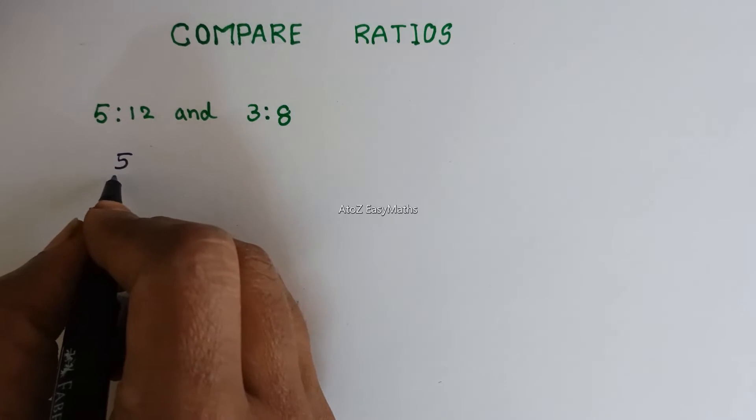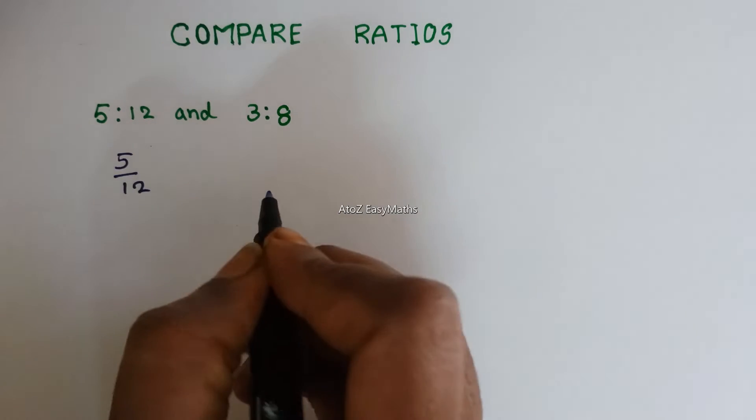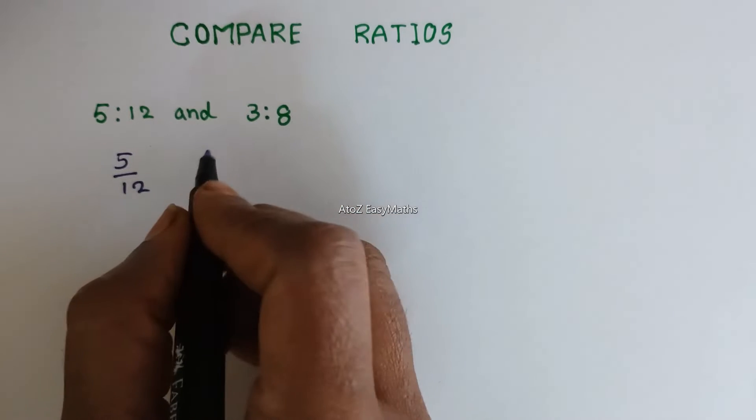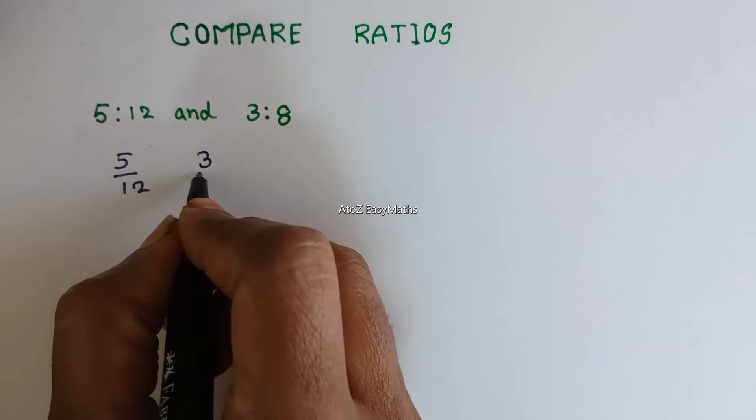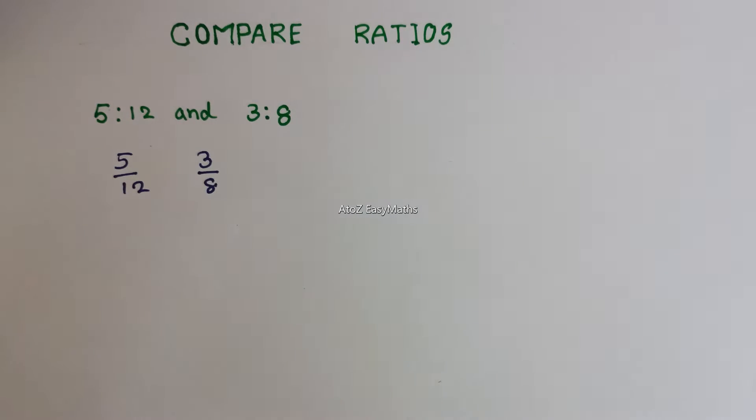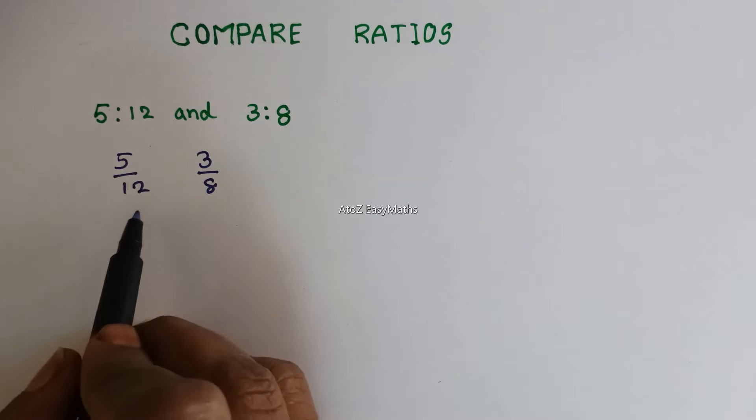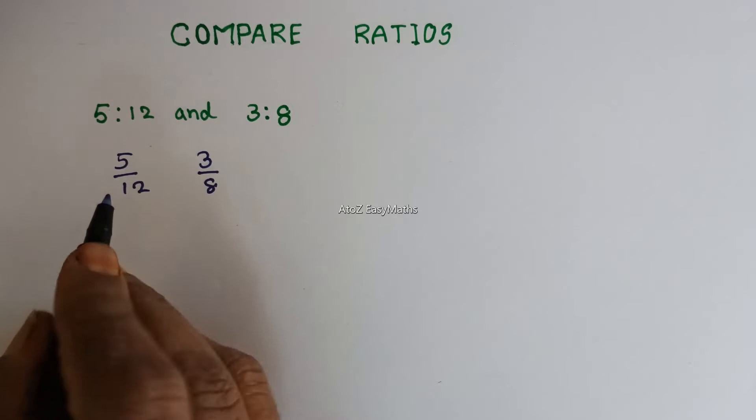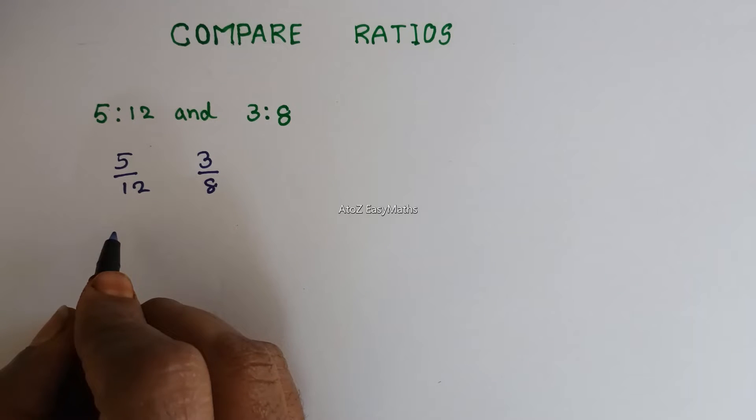We can write 5 over 12 and 3 is to 8 as 3 over 8. Now we can make the denominators equal. If the denominators are equal, then whichever numerator is bigger, the fraction is bigger. That means the ratio is bigger. To make the denominators equal, we multiply with the same digit in numerator and denominator.